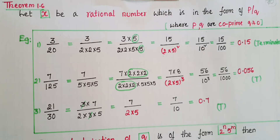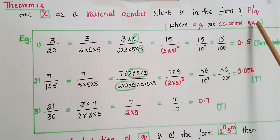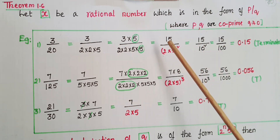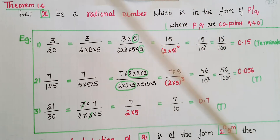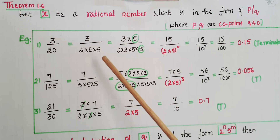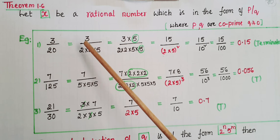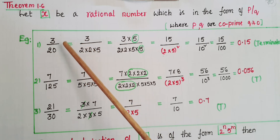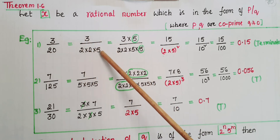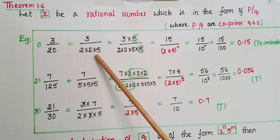Now we have to check if a rational number in the form p by q, where p and q are co-prime and q is not equal to zero, has a terminating decimal expansion or not. For that we check whether the denominator is in the form 2 to the power of n into 5 to the power of m. So if the rational number is 3 by 20, prime factorize: 3 by 2 into 2 into 5. This is in the form 2 to the power of n into 5 to the power of m, so this rational number has a terminating decimal expansion.